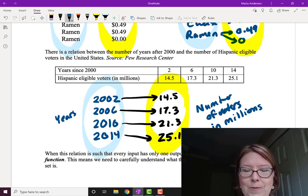And in each example in this lesson, the first set has been the input set, and the second set has been the output set. So we look up the year, we get the number of voters.